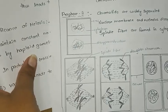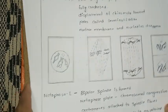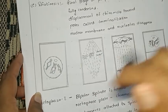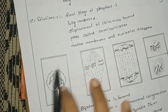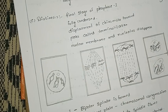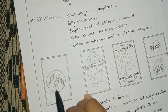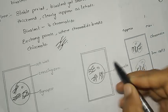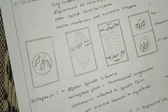After Pachytene comes Diplotene. In this stage, the chromosomes begin to separate. This is the crossing-over process — the chromatids are cut and rejoined. The chromosomes separate and cut in the diagram. This involves the synaptonemal complex. The Diplotene stage is also known as the ovary stage — it can last months to years.